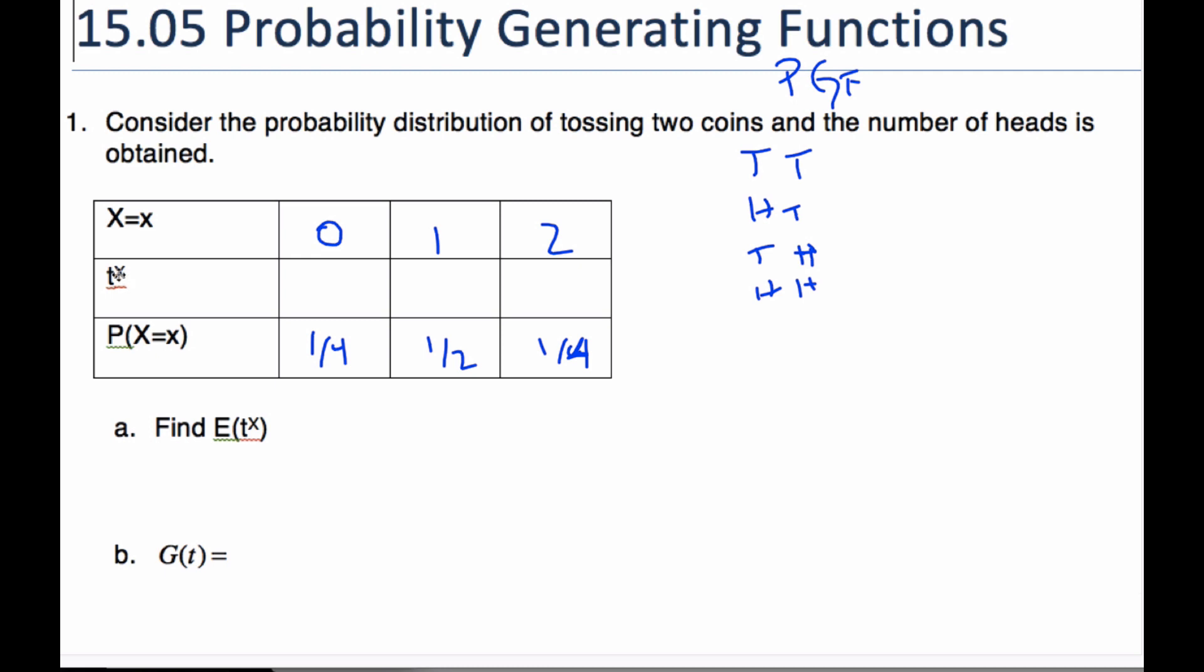However, this t to the power x means I'm going to make up this dummy variable t, and I'm going to raise it to this x, so it's t to the zero, t to the one, and then t to the two.